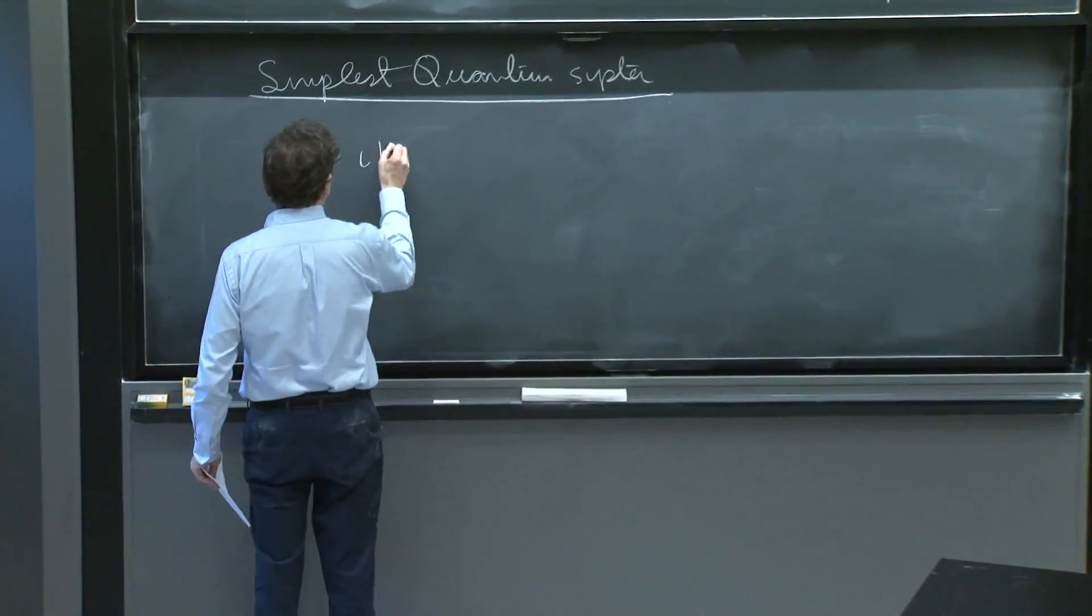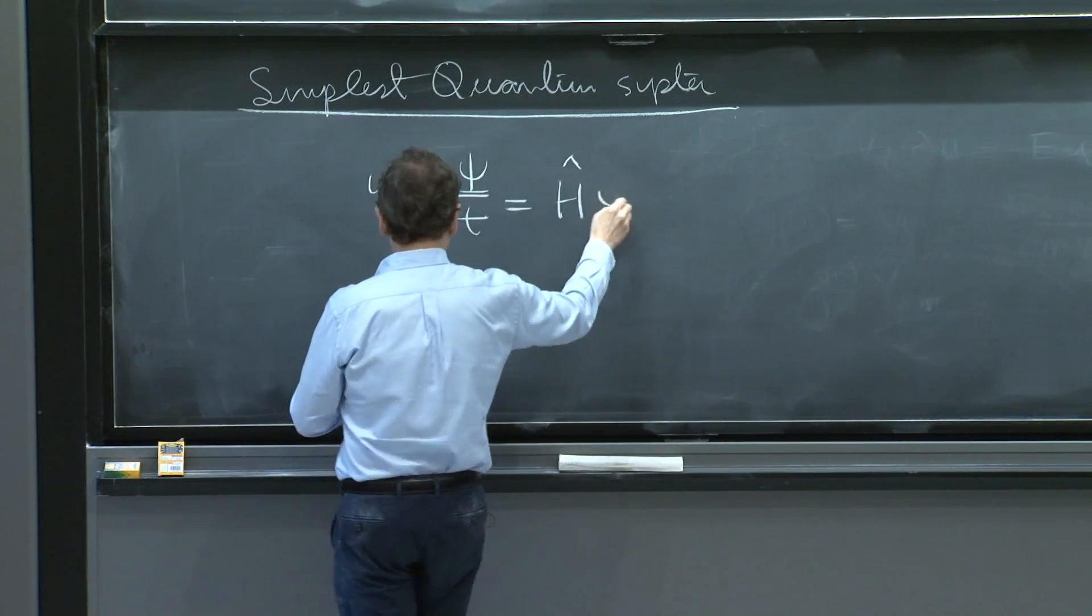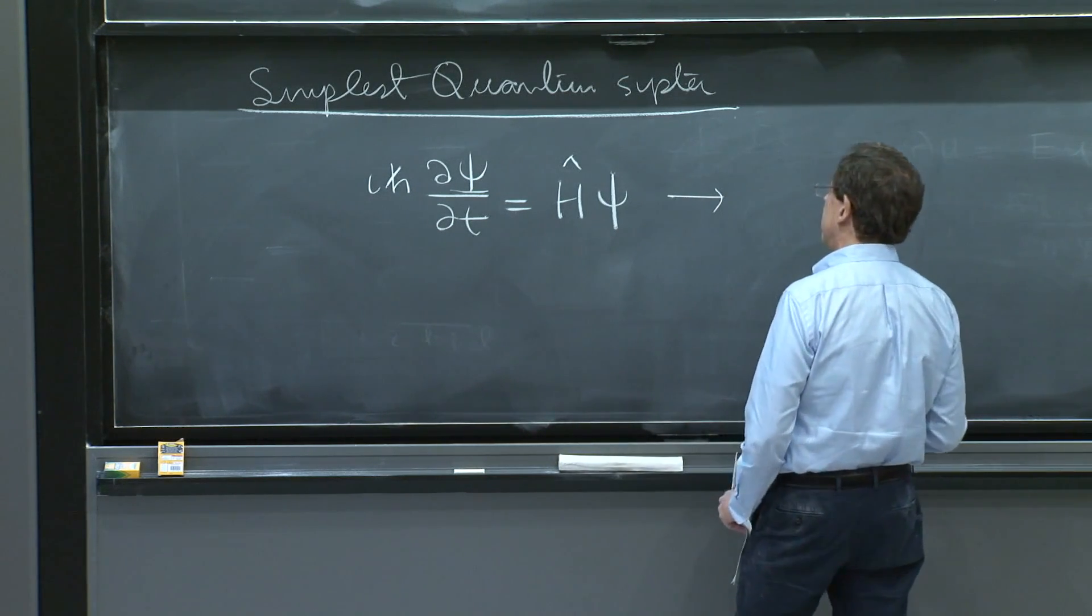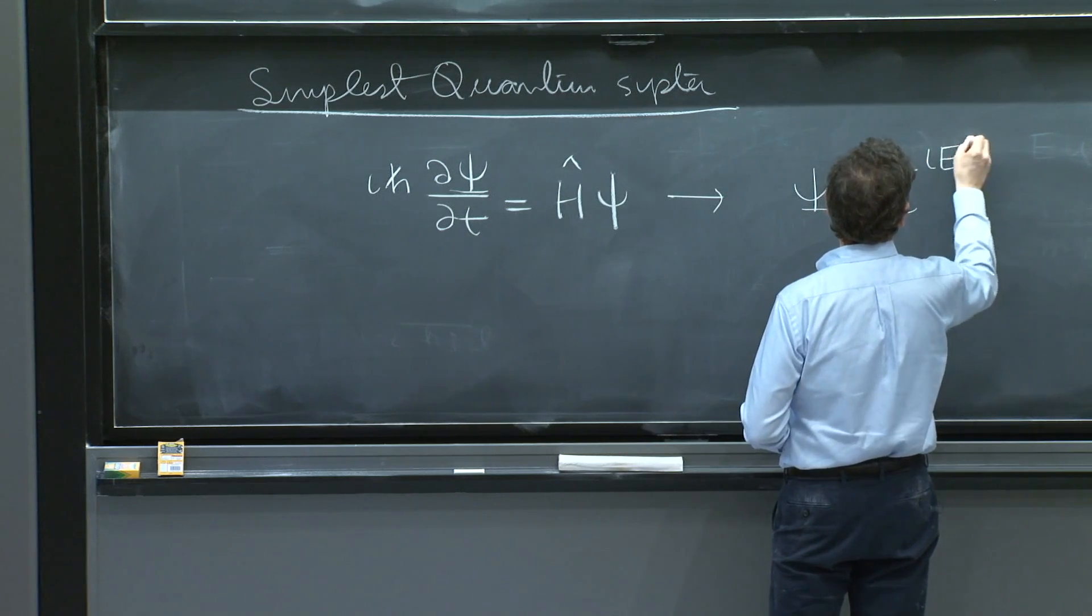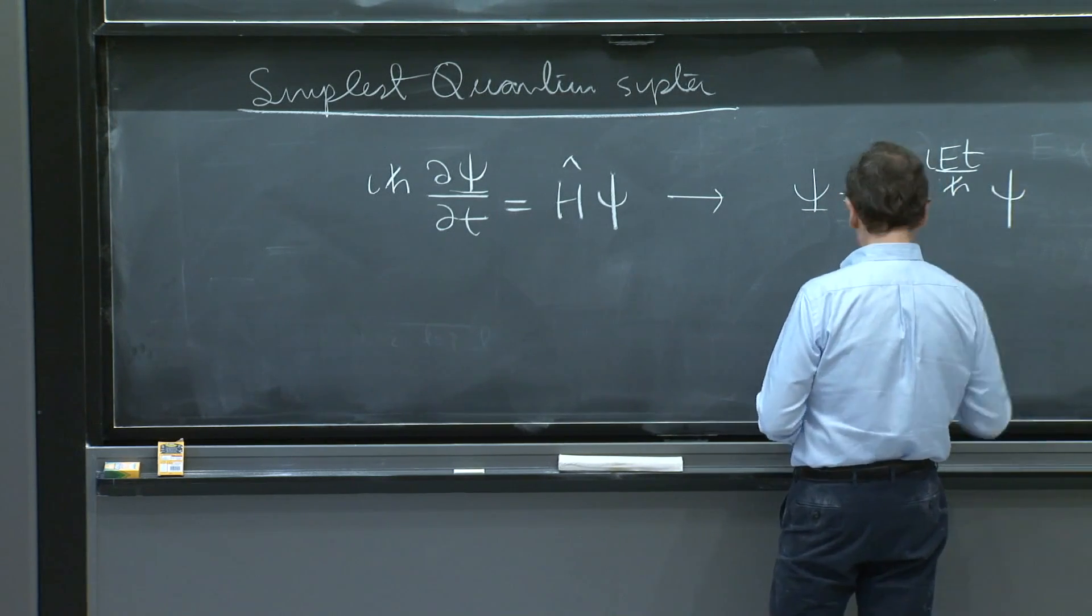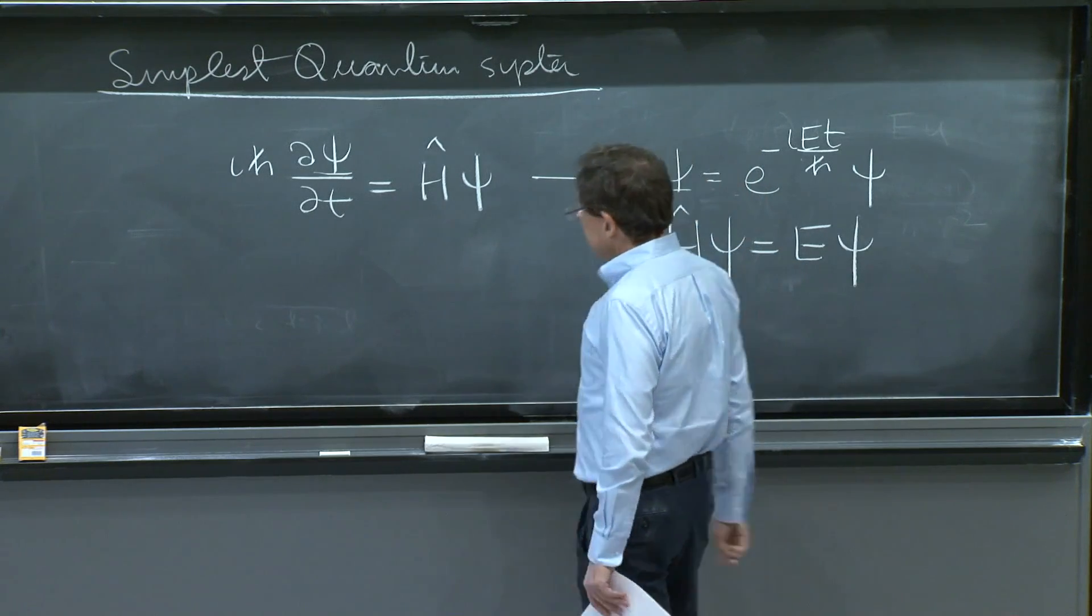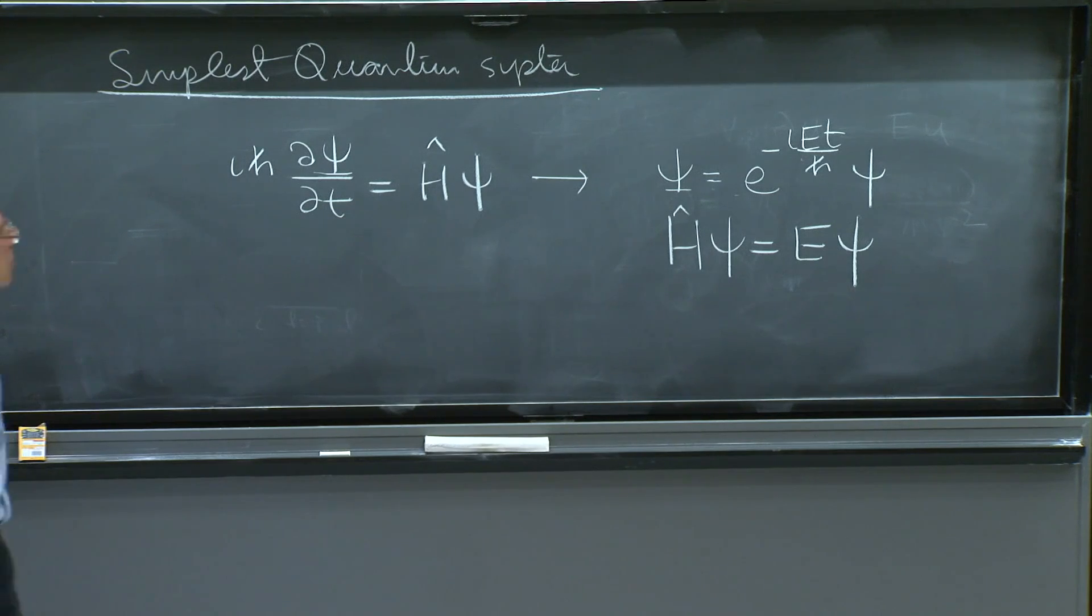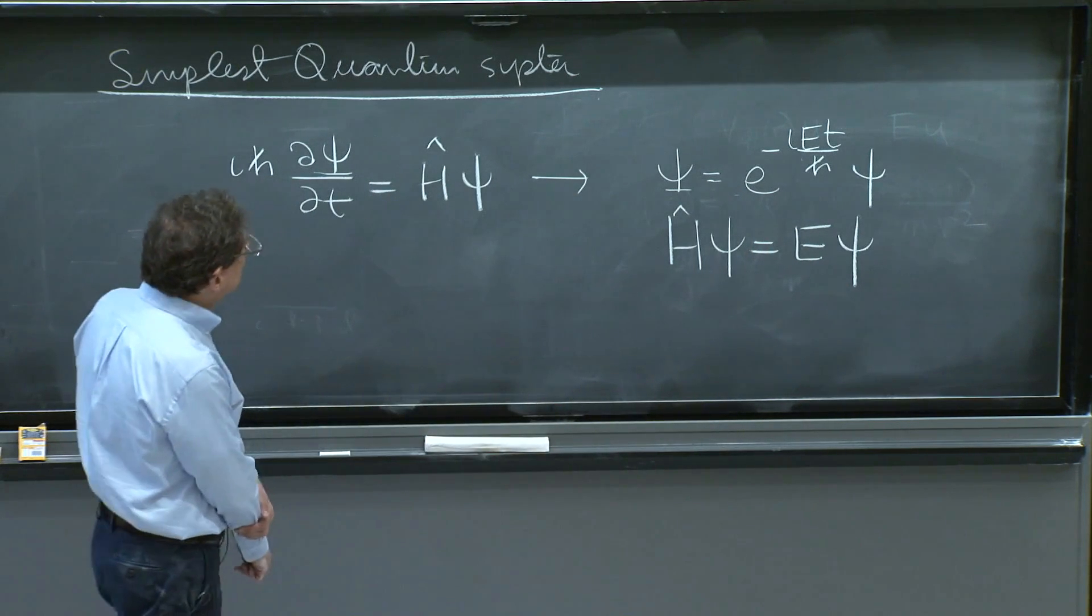Well, suppose you have the Schrödinger equation, ihψ. We work in general. We know this thing has energy eigenstates, and probably we should focus on them. So psi equal e^(-iEt/ℏ) times little psi. And then you have Hψ = Eψ. So that is quantum mechanics. You could say, it's up to me to decide what the Hamiltonian is if I want to invent the simplest quantum mechanical system.